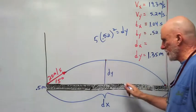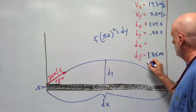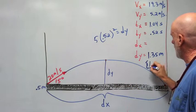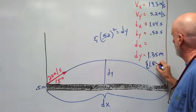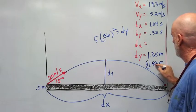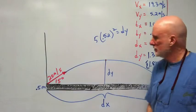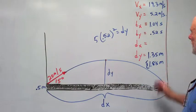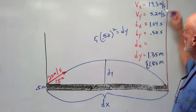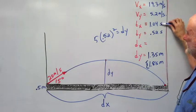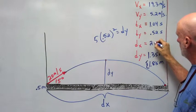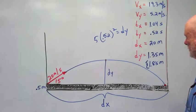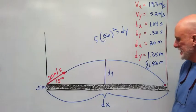Now, don't forget, there's 0.5 meters here. The actual height will be 1.85 meters. That will be the actual height. The dx is going to be 19.3 times 1.04, that will be 20 meters. That's it.